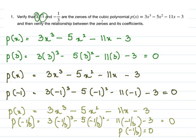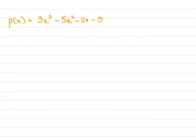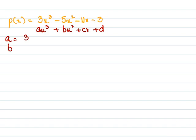In the next part, we verify the relationship between the zeros and coefficients. Comparing p(x) = 3x³ - 5x² - 11x - 3 with the standard form ax³ + bx² + cx + d, we get: a = 3, b = -5, c = -11, and d = -3.